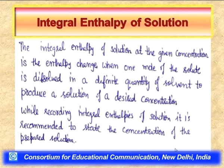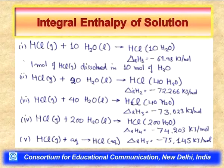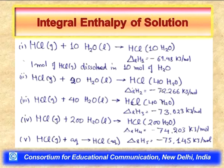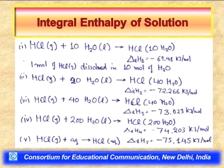For example, dissolving one mole of HCl gas in 10 moles of water gives an integral enthalpy of solution of −69.48 kJ/mol. In 20 moles of water it changes to −72.26 kJ/mol; at a 1:40 mole ratio it becomes −73.02 kJ/mol. The value continuously increases but stagnates after a certain point — at a 1:200 mole ratio it is −74.22 kJ/mol, and in aqueous (large quantity of water) it nearly stagnates thereafter.